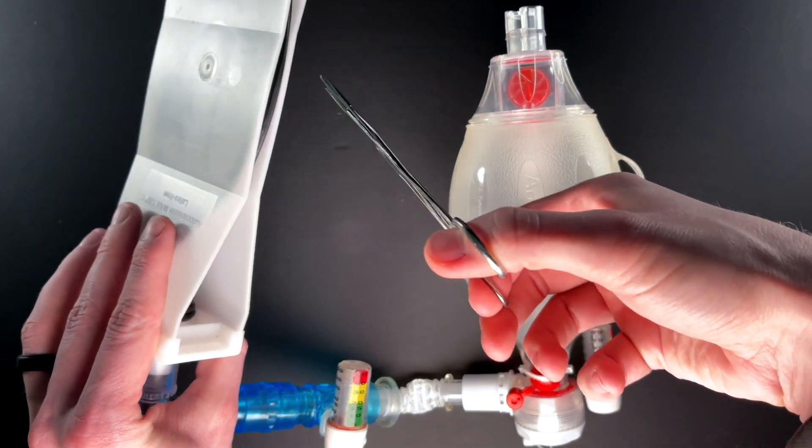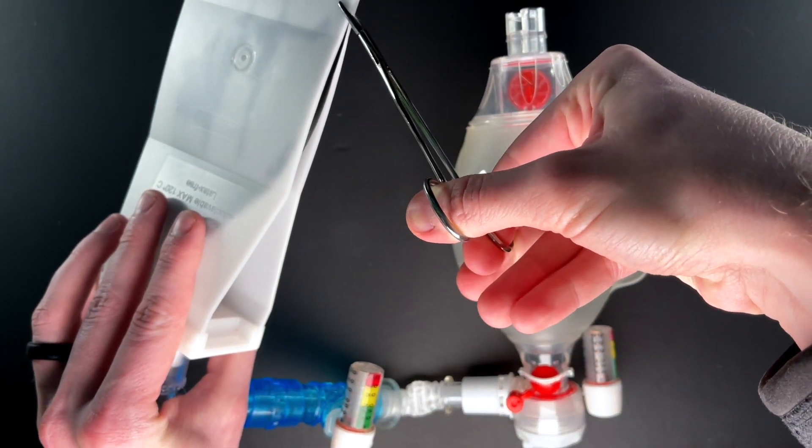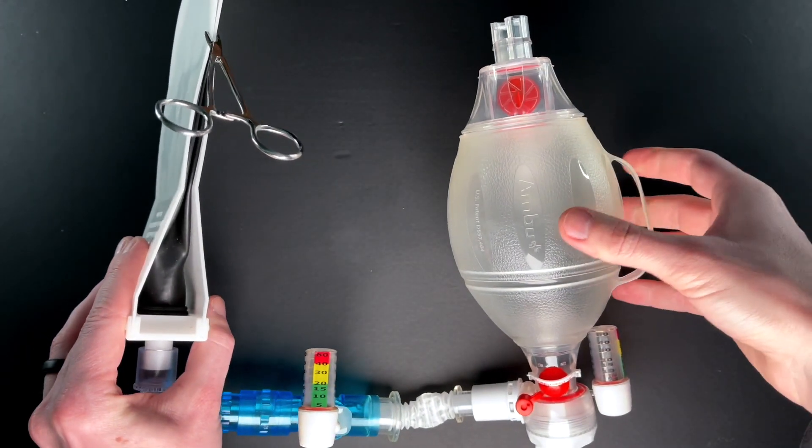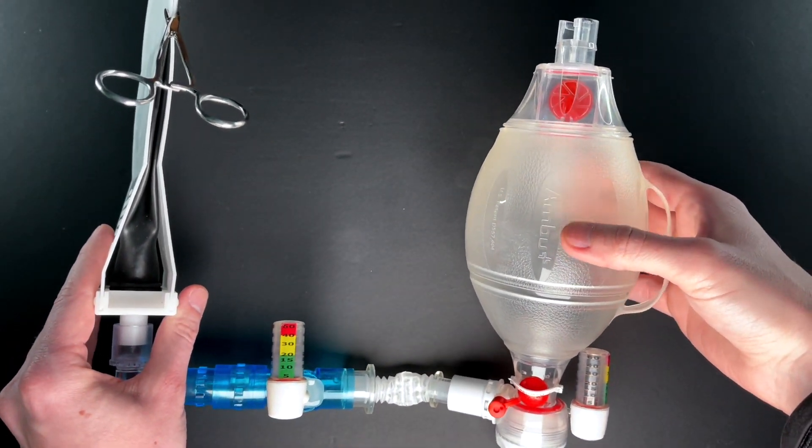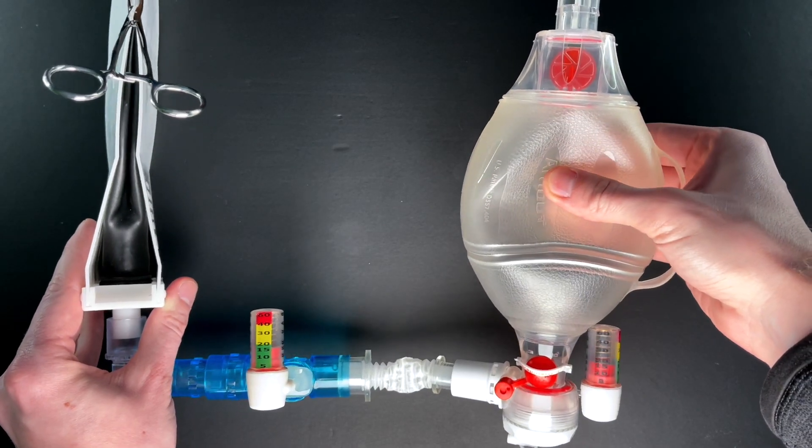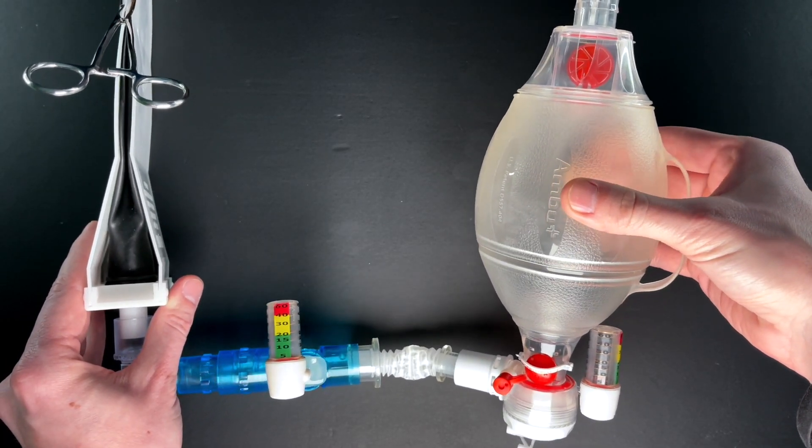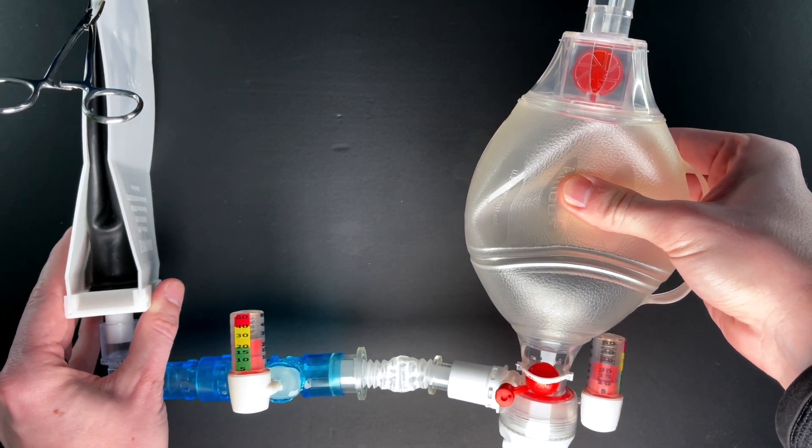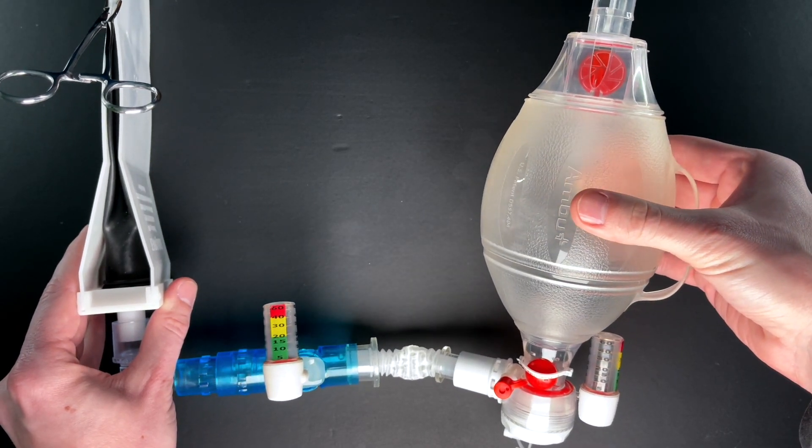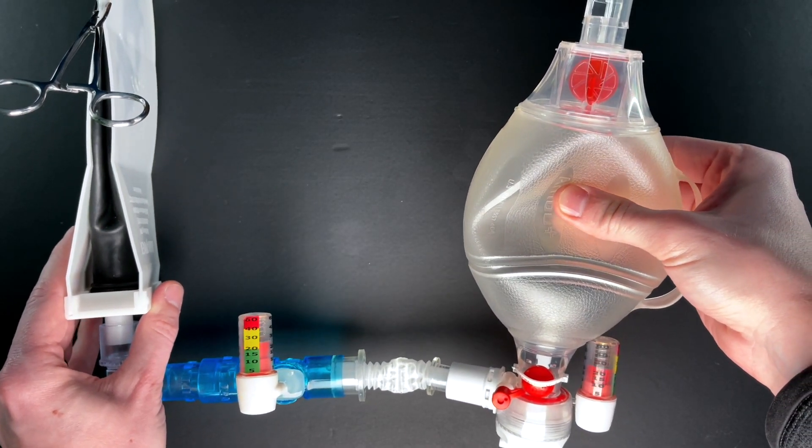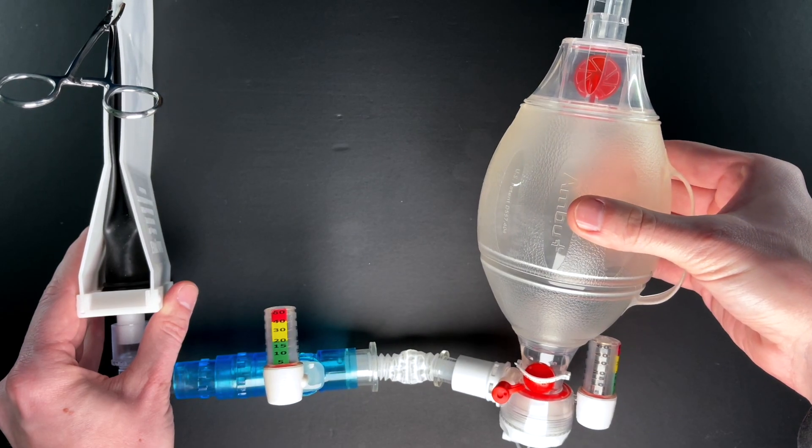But if I were to take this clamp and put it on the test lung, that would simulate a decrease in compliance. When I squeeze this, the pressure is going to ramp up really quickly. For a ventilator, if you took a plateau pressure, both the peak and the plateau would be high. There's really no escaping this pressure because it's all the way down at the end of the road.